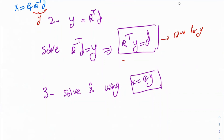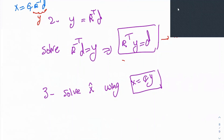That's how you find the least norm solution using QR factorization. That's it for this video. Thank you so much for listening. In the next video, I would like to talk about the Cholesky factorization, nonlinear least squares, and perhaps the Newton method for convex optimization problems. Thank you so much.